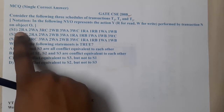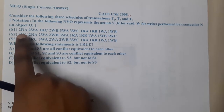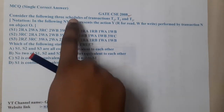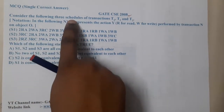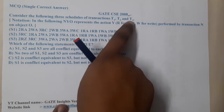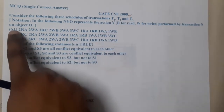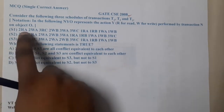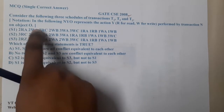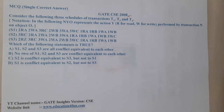There are three schedulers of transactions T1, T2, T3. In each of them, we are having three transactions.